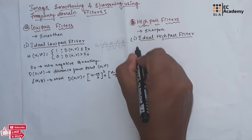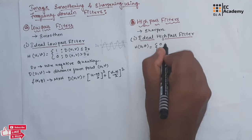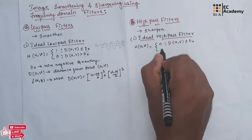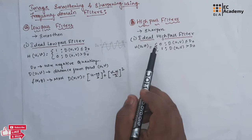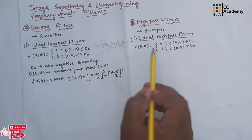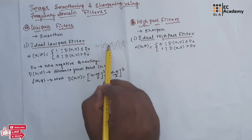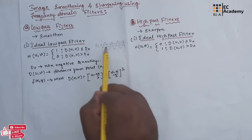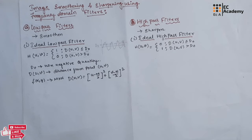The ideal high pass filter transformation function can be written as: H(u,v) = 0 for D(u,v) ≤ D0, and H(u,v) = 1 for D(u,v) > D0. So the high pass filter transformation function is 1 for frequencies above D0 and 0 for frequencies below D0. This means the ideal high pass filter passes only the high frequency component and removes the low frequency component.